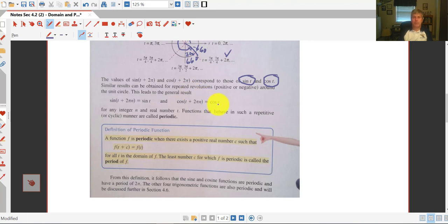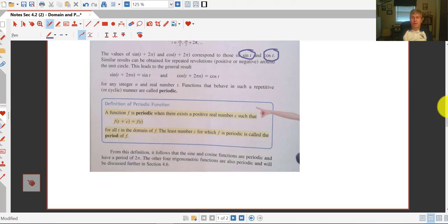So we're just saying every time we do another revolution, whether it be positive direction or negative direction, we're going to come back to our base angle. And that's the definition of periodic. And we will look at the four other trig functions that are also periodic. And we'll discuss those later in chapter 4.